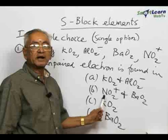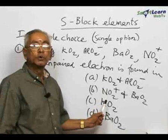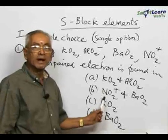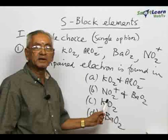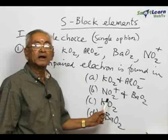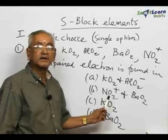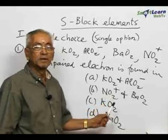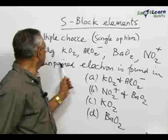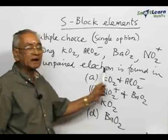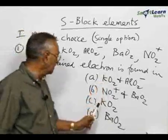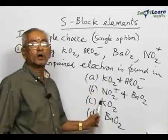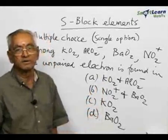Superoxide contains the anion O₂⁻. This O₂⁻ contains a single unpaired electron — it is an odd electron species and exhibits paramagnetism. Therefore, the answer to this question is that the unpaired electron is found in KO₂, making option C the correct answer.